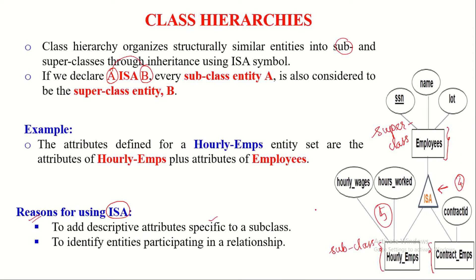You can understand this reason by observing this example. The hourly employee subclass takes only the attributes applicable to it. Contract ID is not applicable to hourly employees, so it is not used for them — it takes only attributes that are specific to it. Similarly, the contract employees entity set takes only the four attributes applicable to it, and does not take hourly wages and hours worked, which are not applicable to it. We can achieve this only by using the ISA symbol.